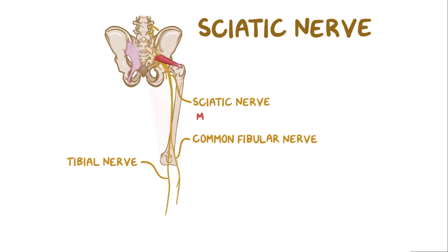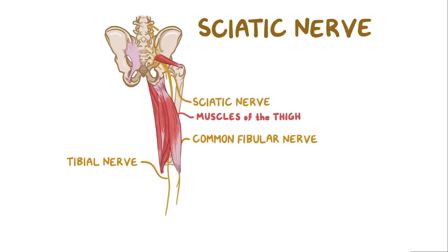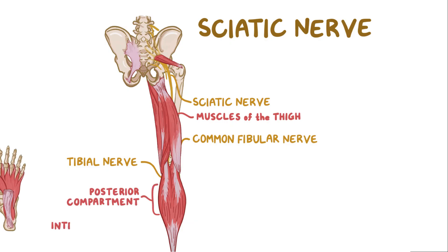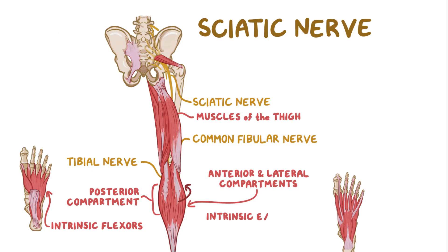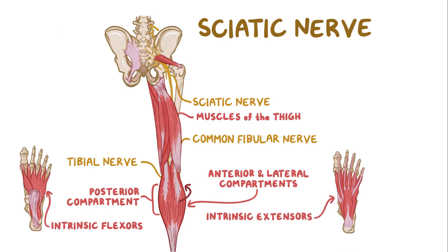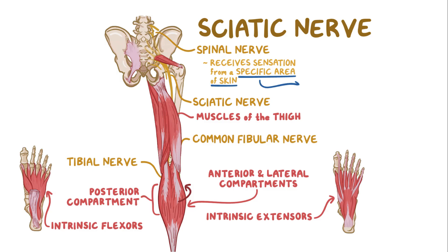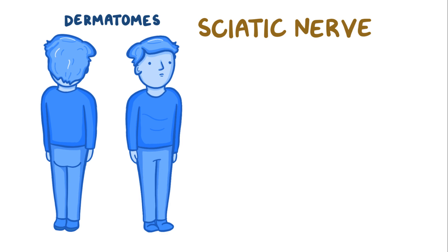The sciatic nerve innervates the muscles in the back of the thigh. The tibial nerve innervates the muscles of the posterior compartment of the leg and intrinsic flexors of the foot. The common fibular nerve is in charge of the muscles in the anterior and lateral compartments of the leg and intrinsic extensors of the foot. Each spinal nerve is in charge of the sensation of a specific area of the skin, called a dermatome. Dermatomes of the spinal nerves of the sacral plexus cover almost the entire surface of the thigh, leg, and foot.